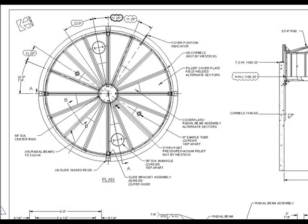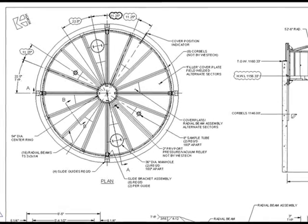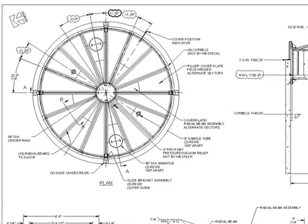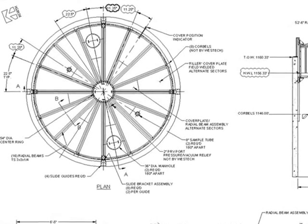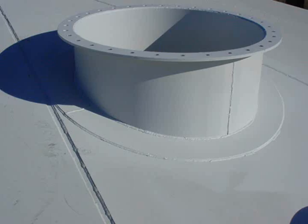Number seven, installing the accessories. Refer to general assembly drawings for position of manholes and accessories. Plumb, level, and tack weld into position. Weld using a gas tight weld as required.